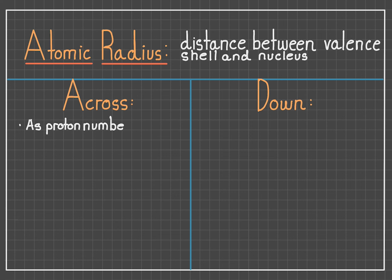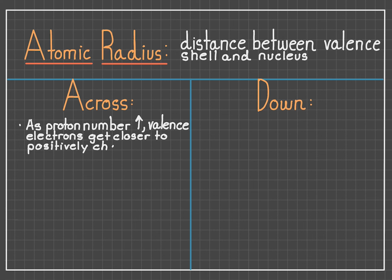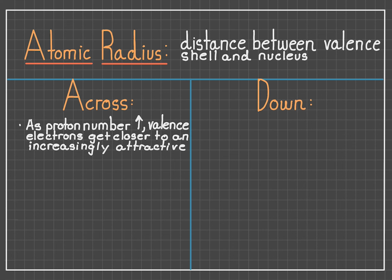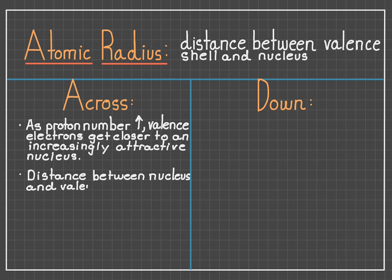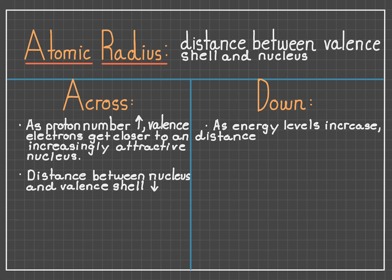Now, let's talk about atomic radius. Atomic radius is the distance between the valence electrons and the nucleus of an atom. As we go across the periodic table, the number of protons increases, and the pull that the nucleus has on the valence electrons — which we can think about as the limit to how far electrons can go — increases as well. This causes valence electrons to get closer to the nucleus, reducing the atomic radius.